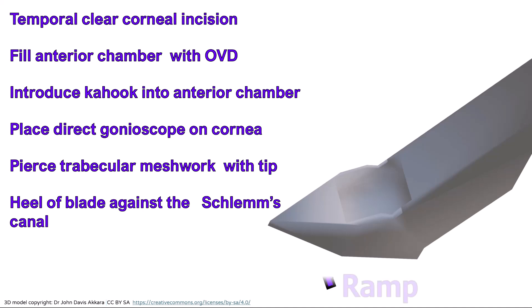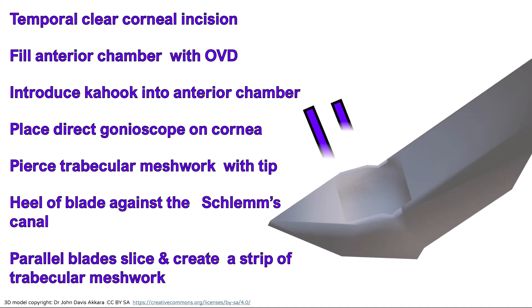During this manoeuvre, the ramp gently stretches the trabecular meshwork while the dual blade slices it, creating a strip of the meshwork which is then removed. If necessary, the blade may be rotated and swept in the opposite direction for additional trabecular meshwork removal.